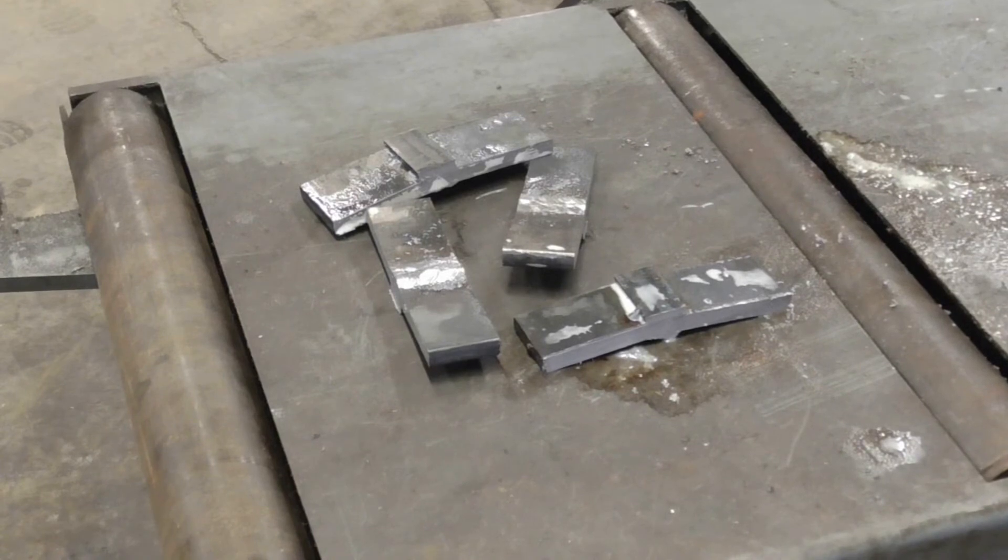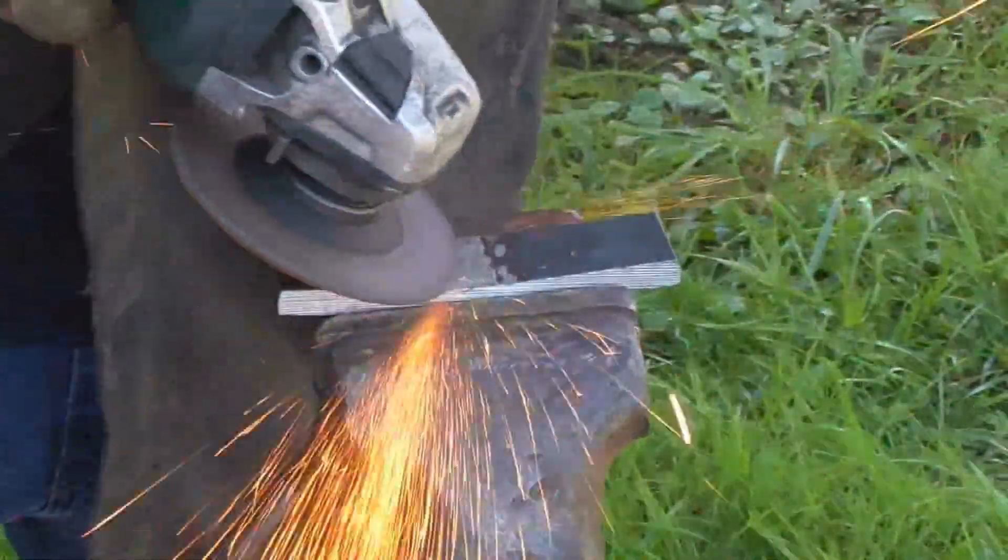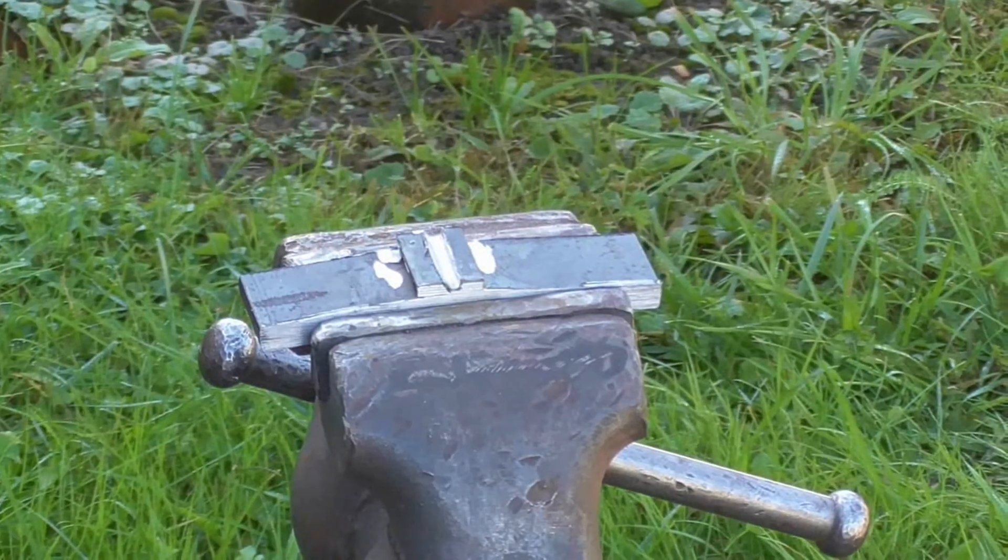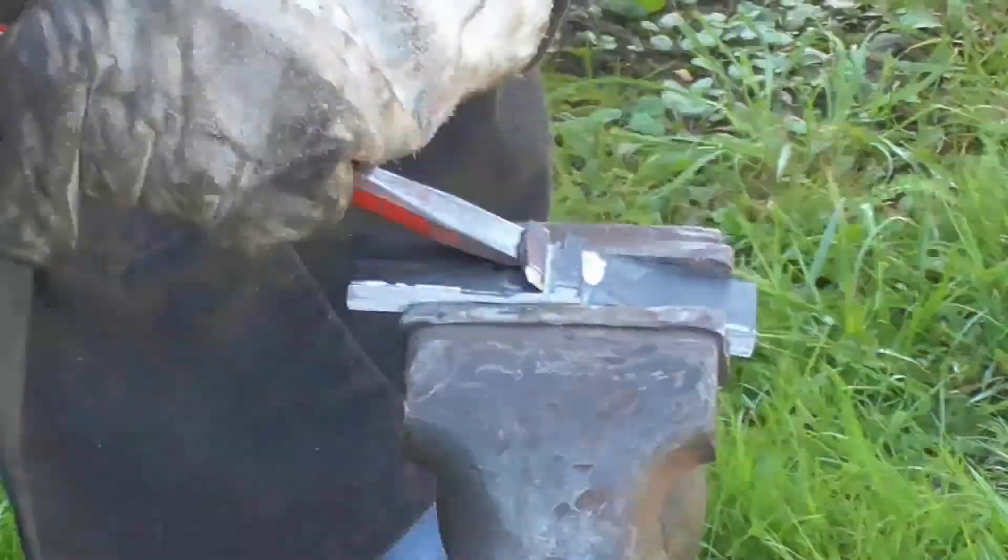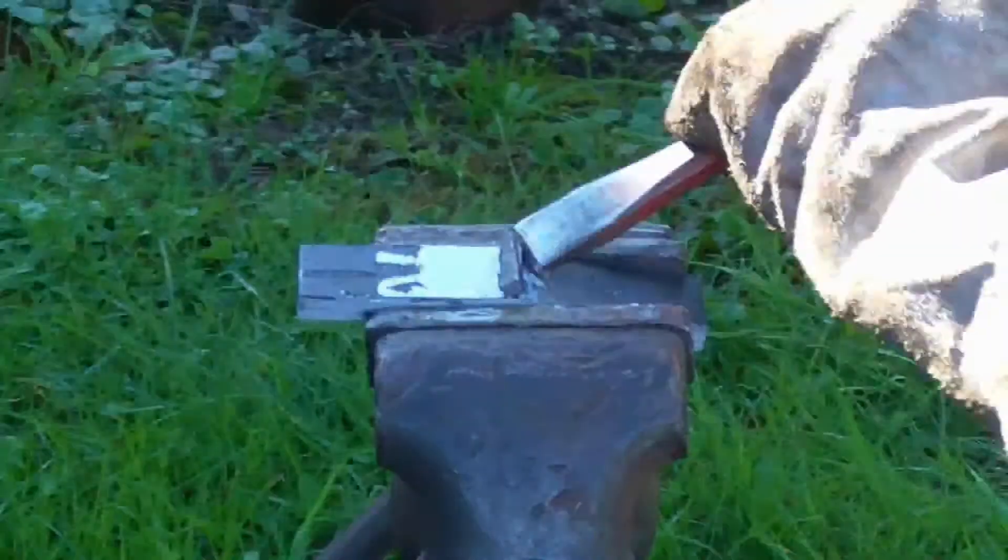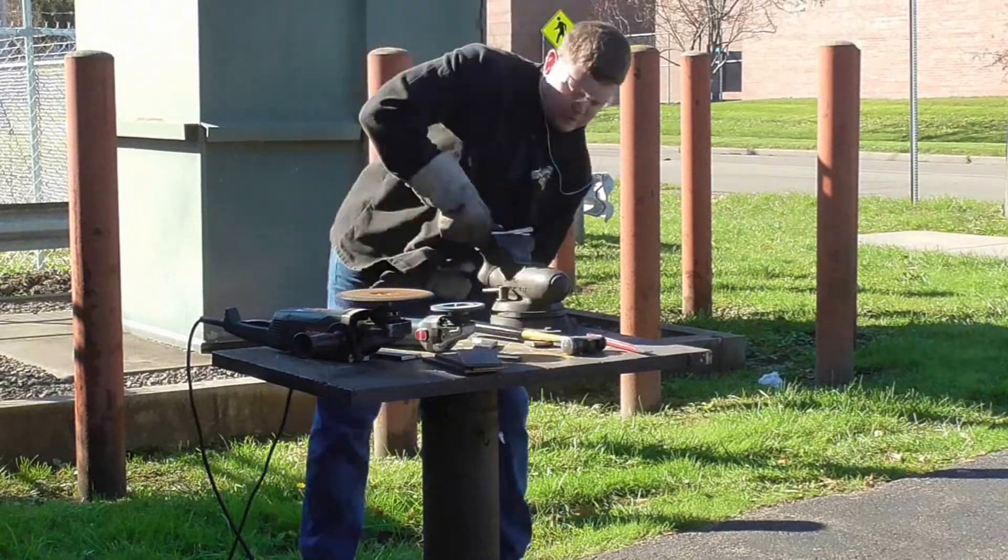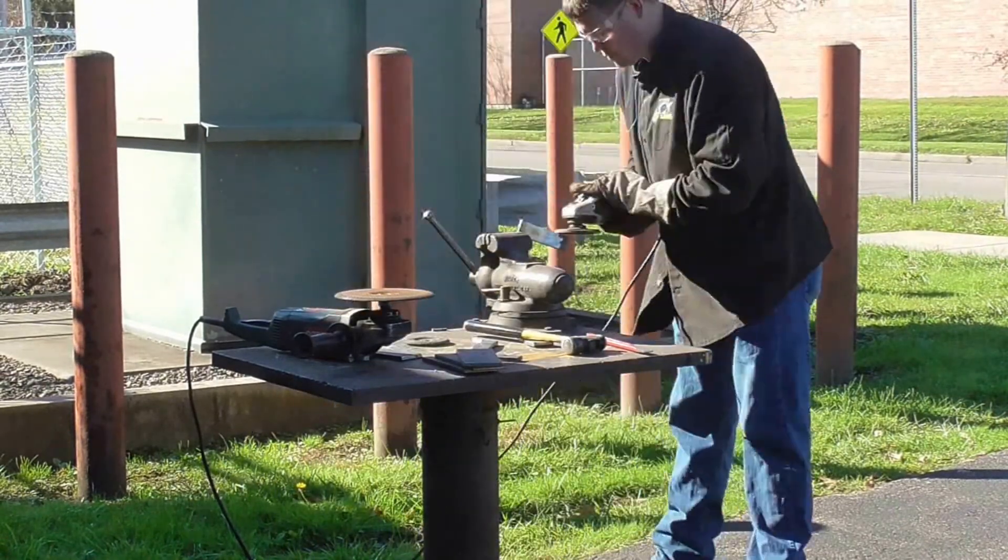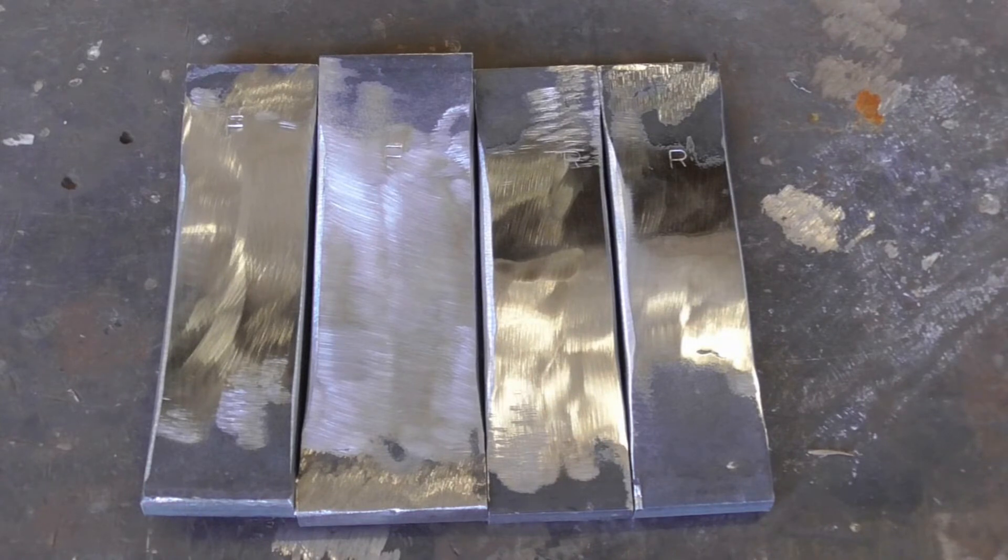So we just got these all cut in the band saw. Now we got to grind everything flush. So backing bar off and the face of the welds got to be ground right down. We're going to do that with a hard stone. Then we're going to hit it with a 36 grit flapper to smooth it out. So we just got done doing our grinding. I stamped two R's, two faces. So we're going to do two root bends and then two face bends. Let's go over and bend these up.